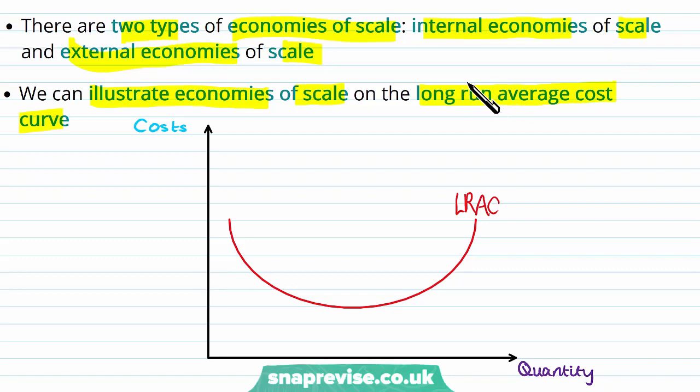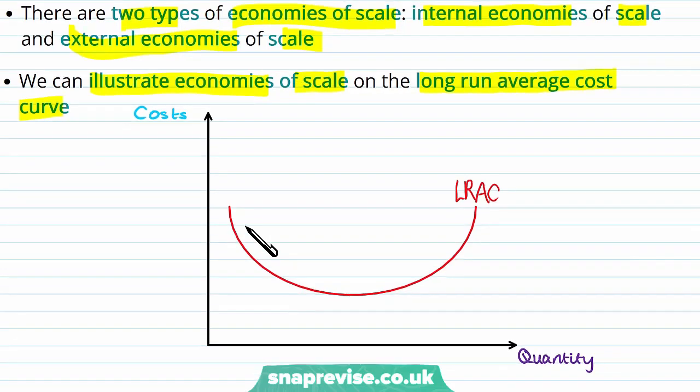When we think about our economies of scale on the long run average cost curve, we can deduce that when we are moving down our average cost curve like this, this is our economies of scale. And why is that the case? Well, we are increasing our costs. However, our average costs are falling more than our quantity because we are experiencing increasing returns to scale.